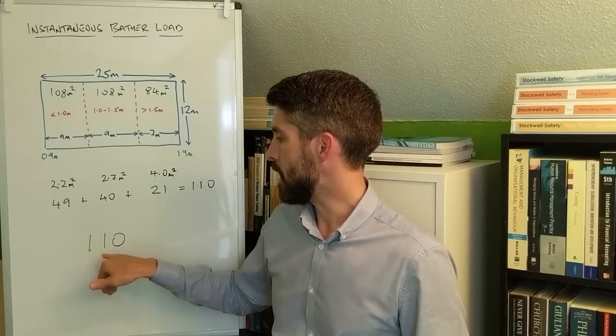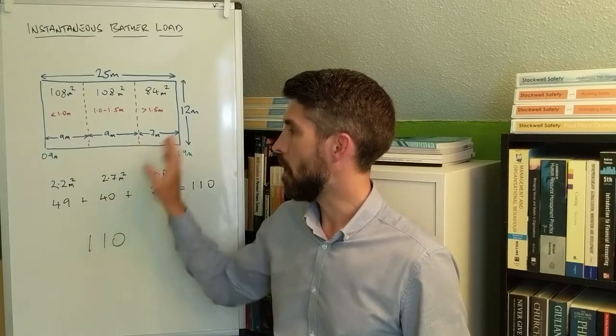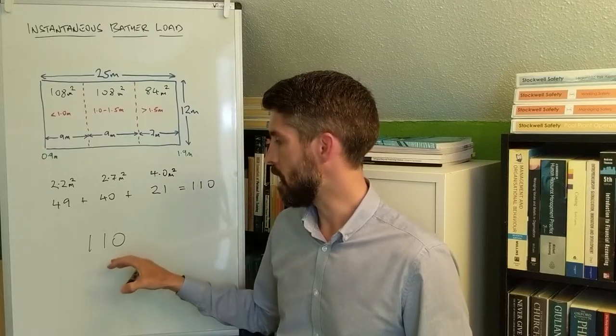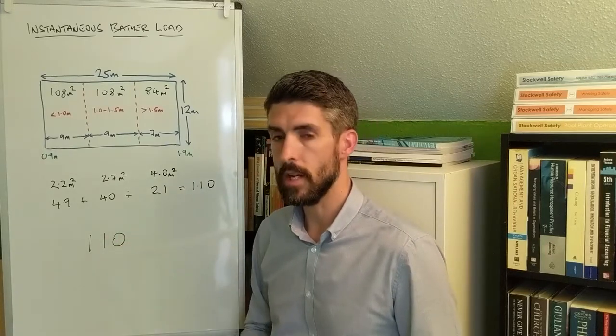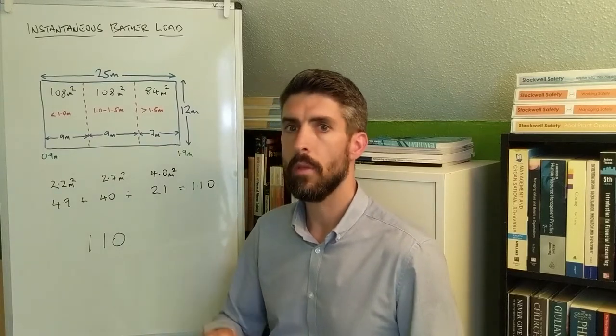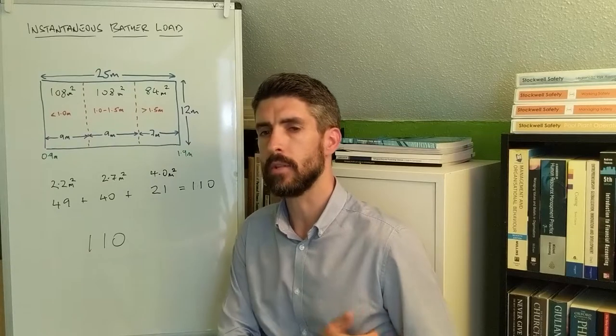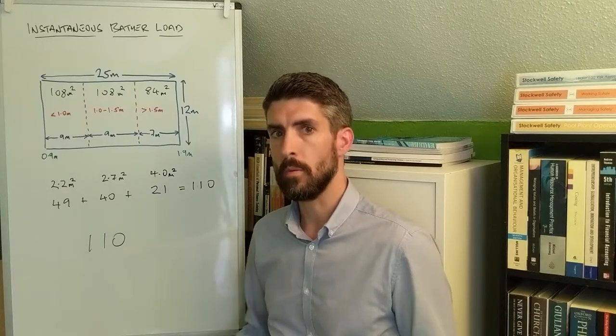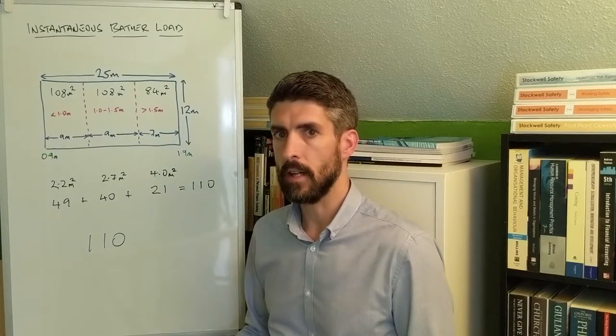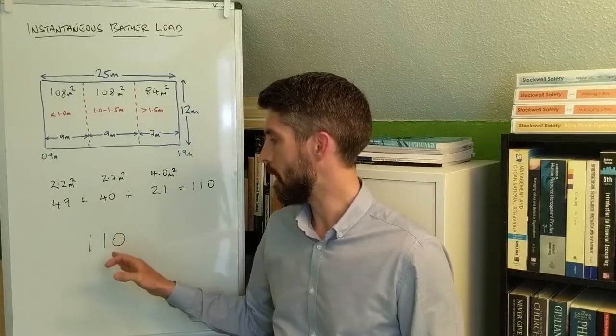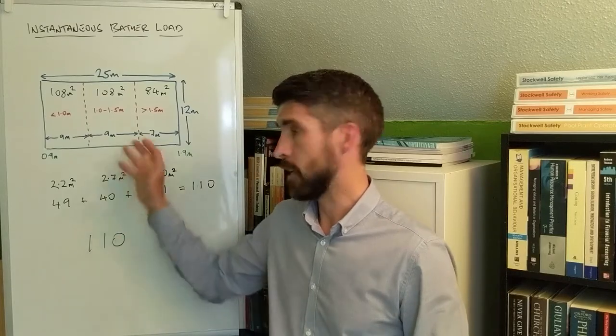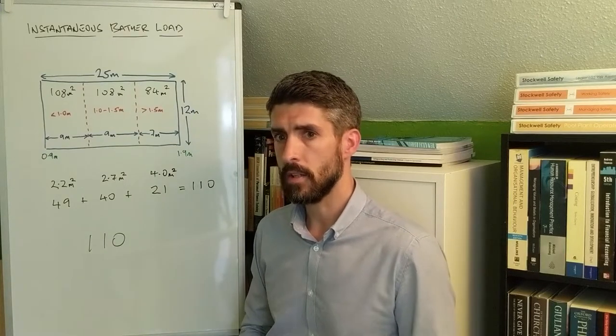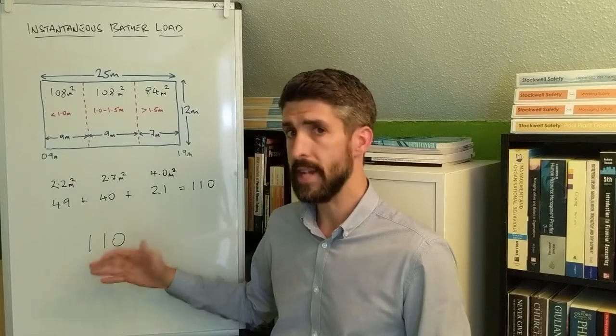Although 110 is the instantaneous bathing load that you've arrived at at the end of these calculations, that's not to say that's necessarily the bathing load that you would go with and record in your NAP, because there are other factors that you would need to take into account. For example, whether the people using the pool are swimmers or non-swimmers. That's a key factor that would need to be taken into account. Even though that's what you've arrived at after doing these calculations, when you subject it to further assessment of risk, you might decide to lower the bathing load to no more than 80, for example.